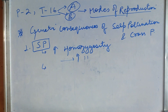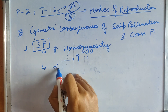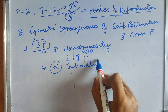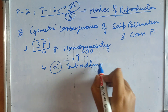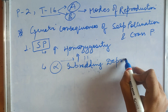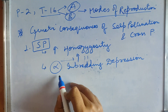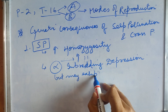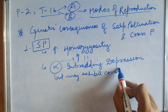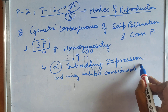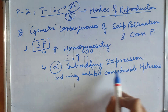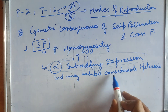As self-pollinated species are highly homozygous, they do not show inbreeding depression. However, they may exhibit considerable heterosis when crossed.